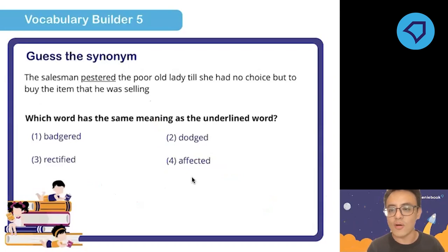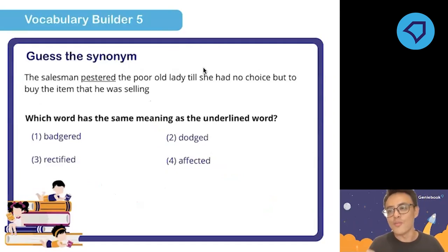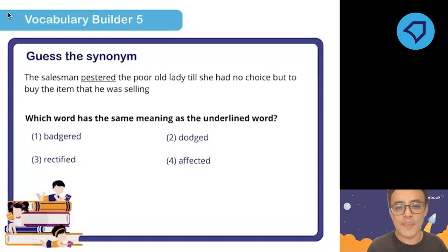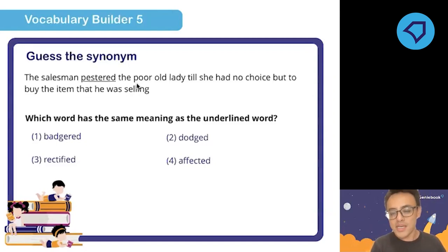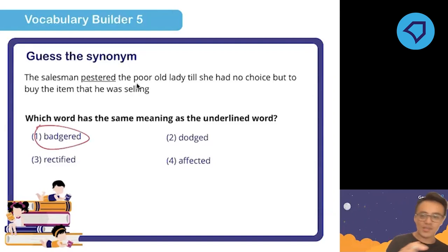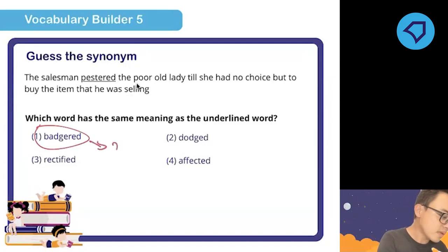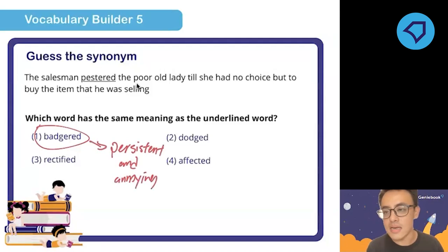Number five: 'The salesman pestered the old lady till she had no choice but to buy the item he was selling.' Have you been pestered recently? Someone approaches you at a shopping center with a donation card and follows you wherever you go — they are pestering you. The correct synonym for 'pester' is 'badger.' To badger someone means to be very persistent and constantly bother them. 'Dodge' means to avoid something, but to 'badger' is to be persistent and annoying.